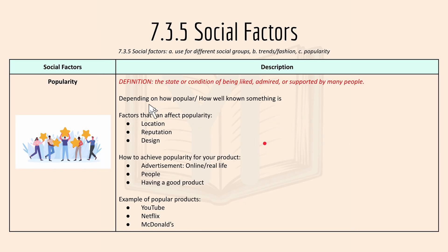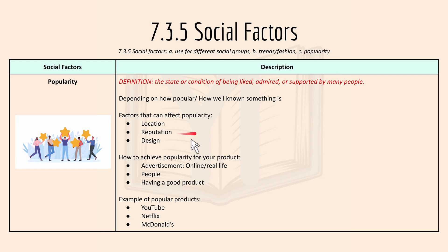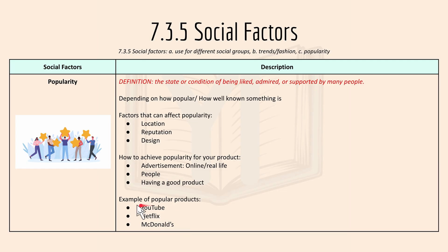For popularity, the definition is the state or condition of being liked and admired. Factors that affect popularity include location, reputation, and design. Ways to achieve popularity include advertisement — online or real life — word of mouth, and having a good quality product. Examples of popular products are YouTube, Netflix, and McDonald's.